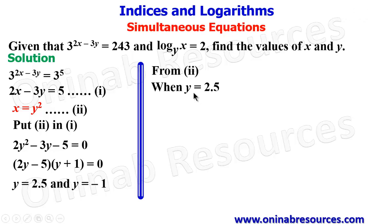So when y is 2.5, x will be 2.5 squared, and 2.5 squared is 6.25. Then when y equals negative 1, x will be negative 1 squared, and negative 1 squared equals 1.